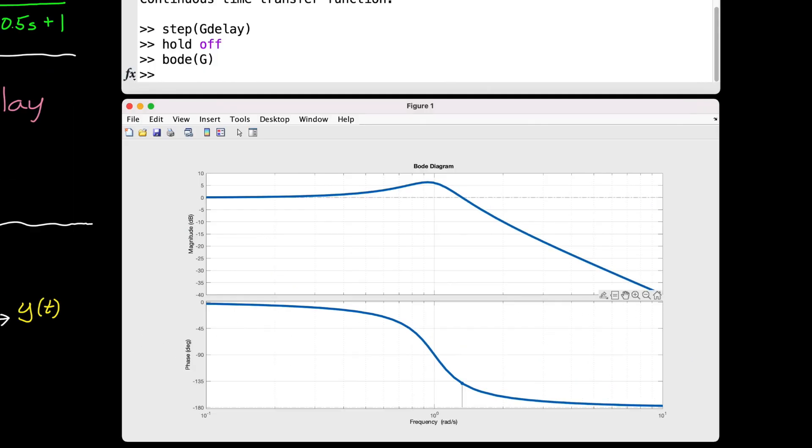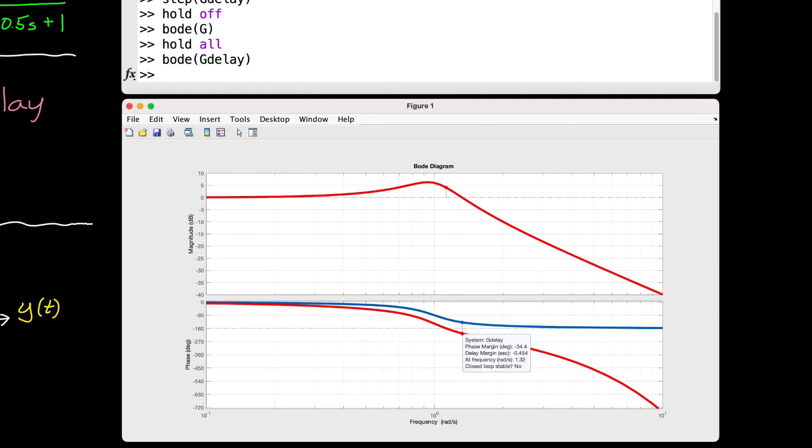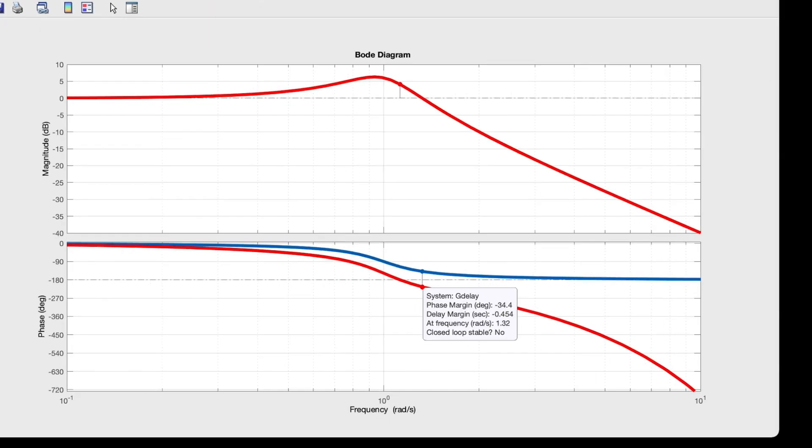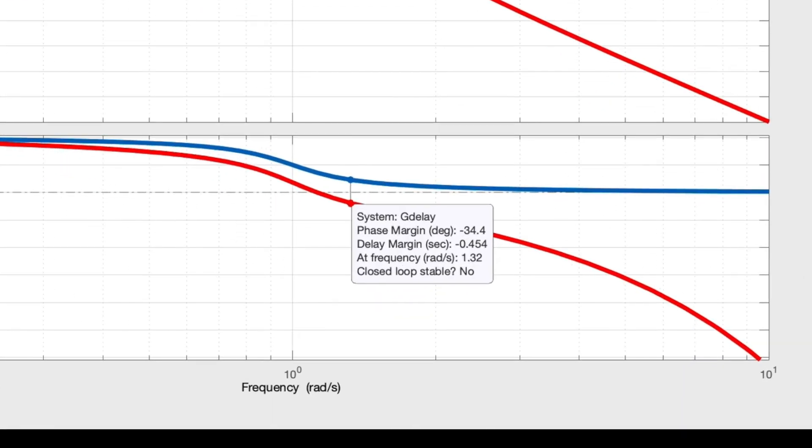However, if we look at the Bode plot for the system with delay, which more closely matches the real system, we see that the delay adds additional phase lag, which lowers the frequency response curve and impacts the stability margins. And importantly, we can see that our stability margins are now negative, and that the closed loop system is actually unstable with this delay. So at least in this example, it's important to account for delay in our model. Without it, we might be deceived into thinking our design is sufficient when it actually isn't.